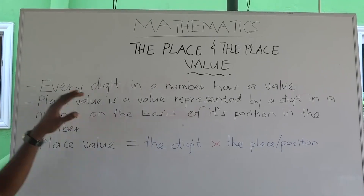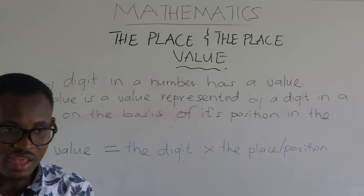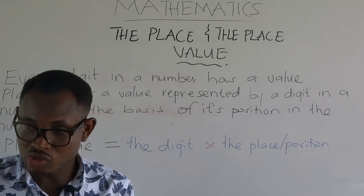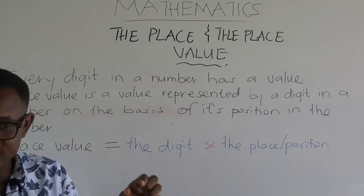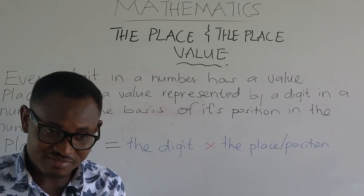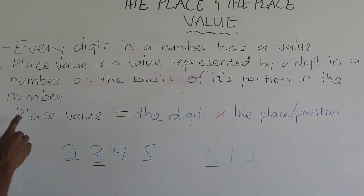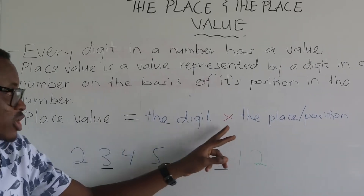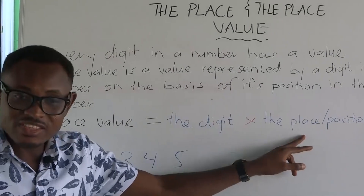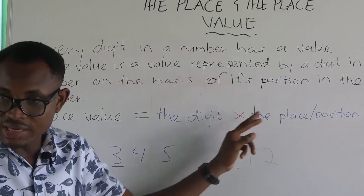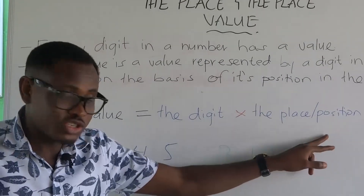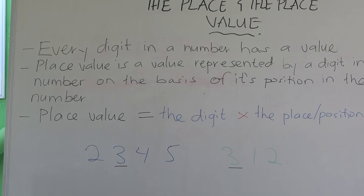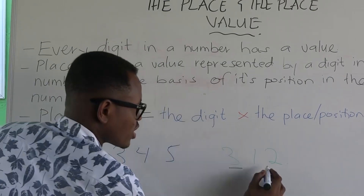Every digit in a number has a value. Place value is equal to the digit multiplied by the place or the position. That's what place value means.